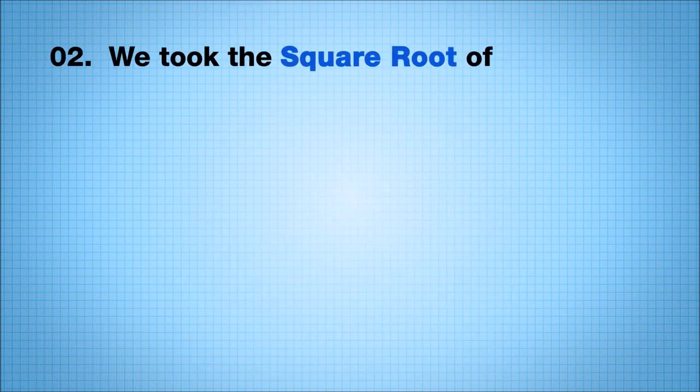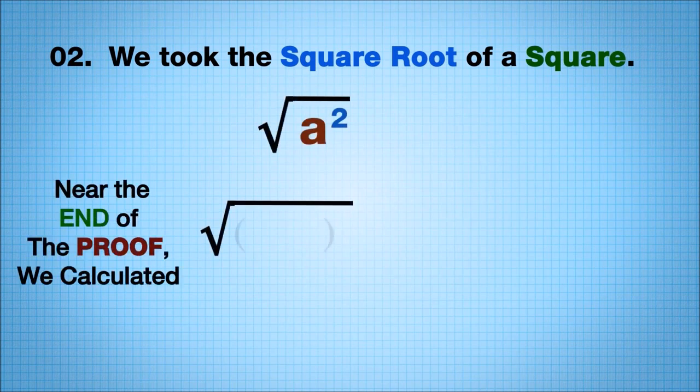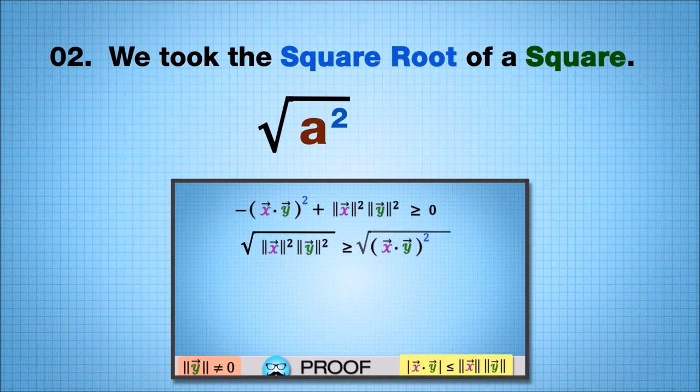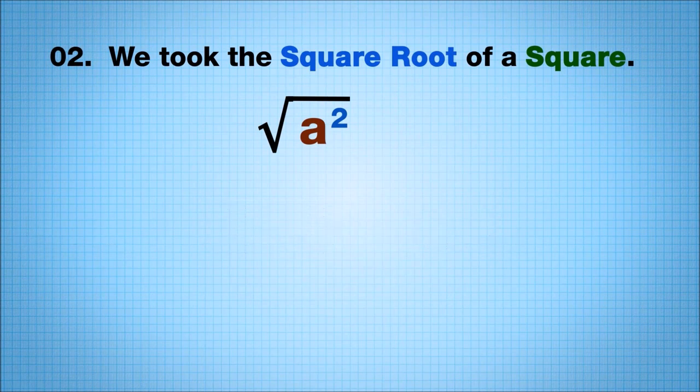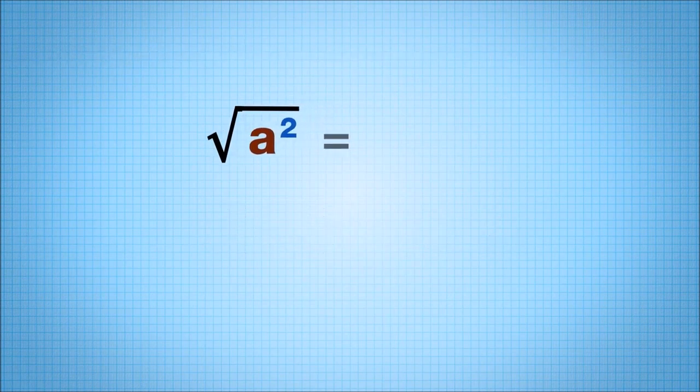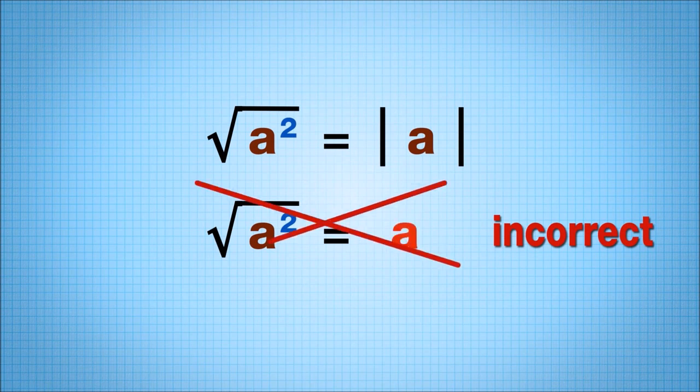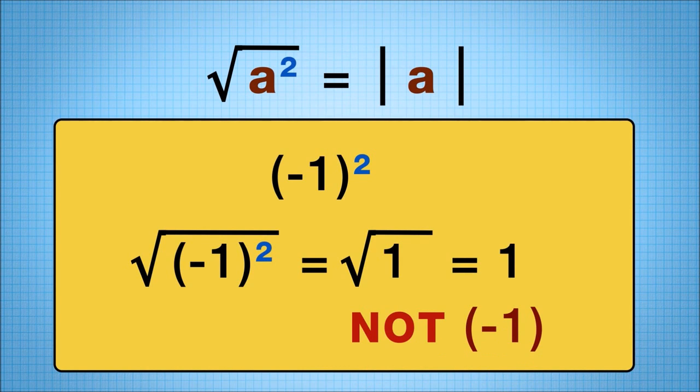Secondly, we took the square root of a square. Near the end of the proof, we calculated the square root of x dot y squared as the absolute value of x dot y. Note the absolute value sign. Generally, the square root of a squared is absolute value of a. It is incorrect to write square root of a squared equals a. Just consider negative one squared. The square root of negative one squared is one, not negative one.